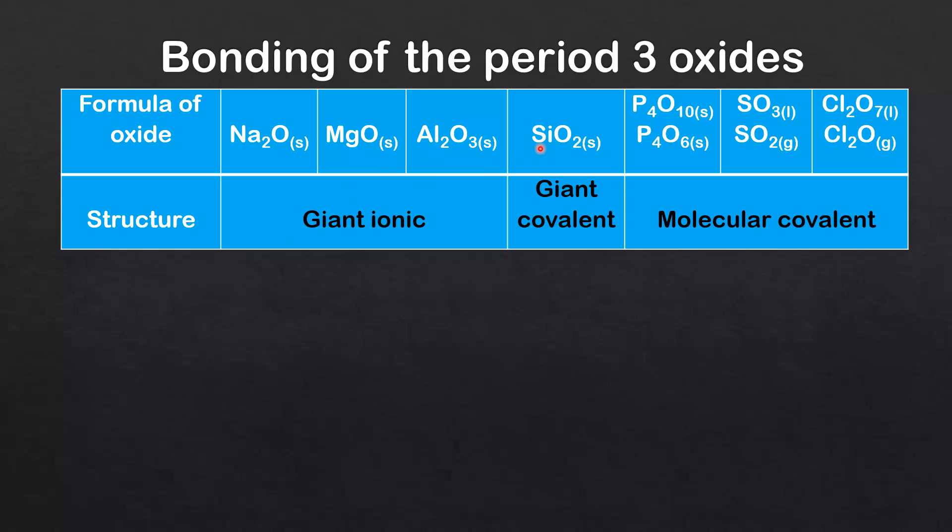The oxide of silicon, which is a semi-metal or a metalloid, has a giant covalent structure, and the oxides of phosphorus, sulfur, and chlorine, which are non-metal elements, have molecular covalent structures.